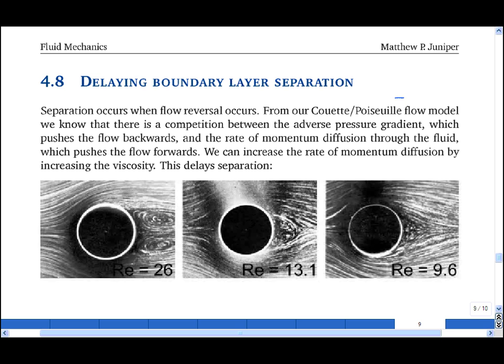When a boundary layer finds itself in an adverse pressure gradient, by which I mean the mean flow is going from a region of low pressure to a region of high pressure, then there is a competition between the pressure gradient pushing backwards and momentum diffusing down from the free stream into the boundary layer.